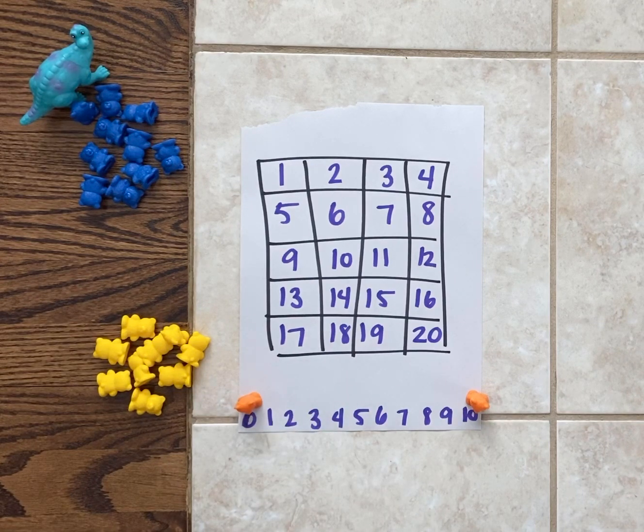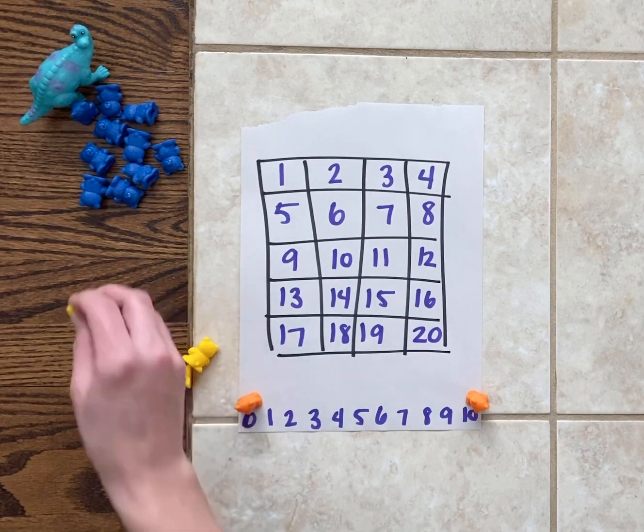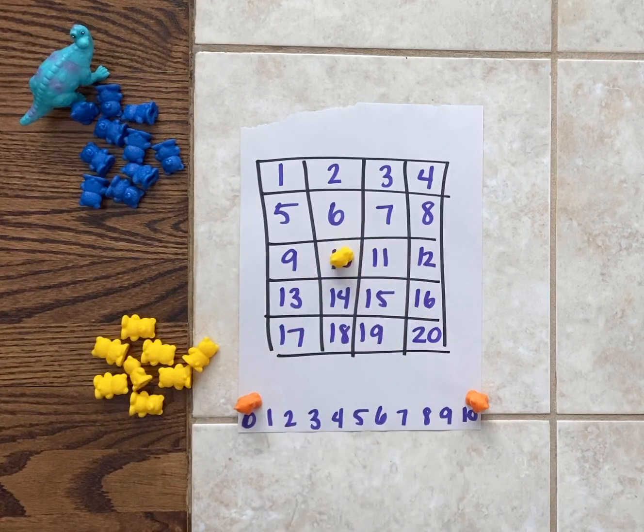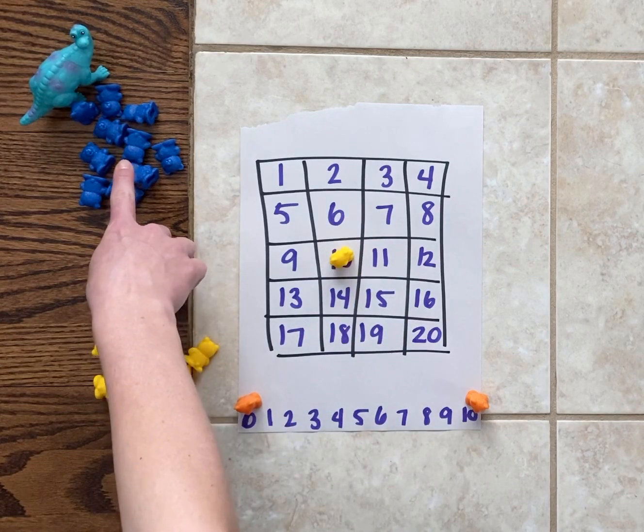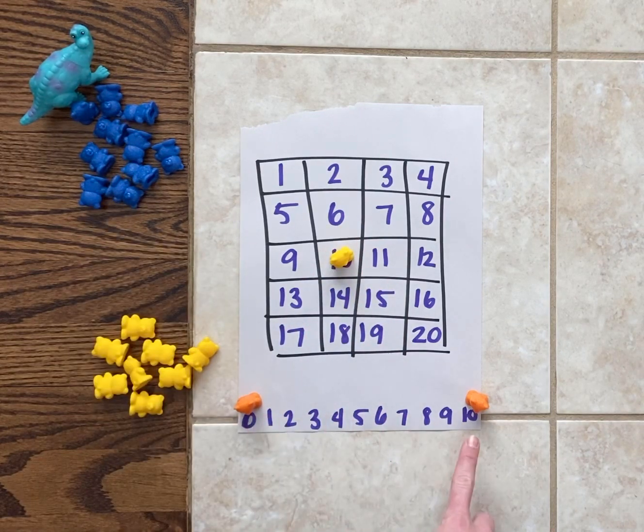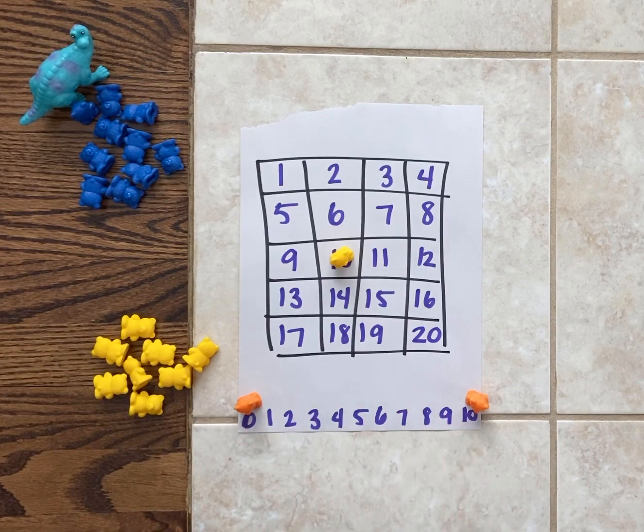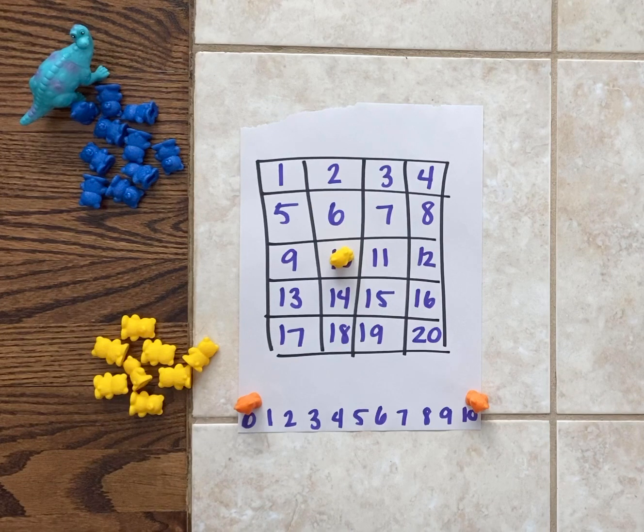10 plus 0 is 10, so I get to put a marker on the 10. Now on dinosaur's turn, dinosaur only gets to move one of these markers.